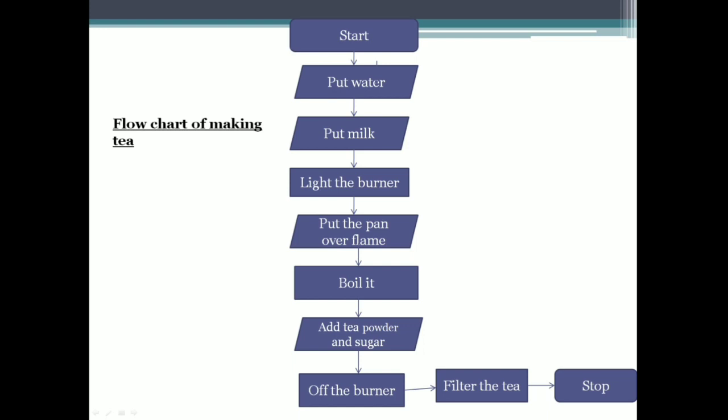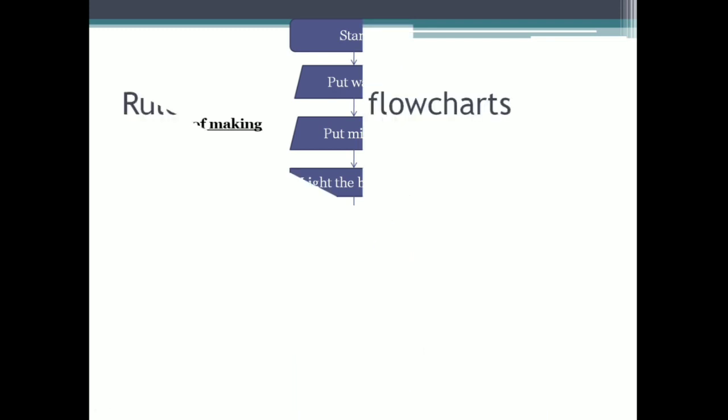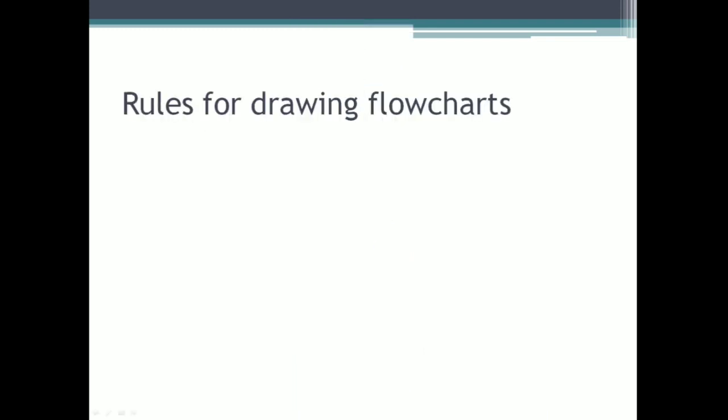The next step is off the burner, which is a process. Then filter the tea, which is also a process, so we use a rectangle shape. To show the end of the flowchart we use the rounded rectangle. For each input and output we should use a parallelogram, and for processes we use the rectangle shape.